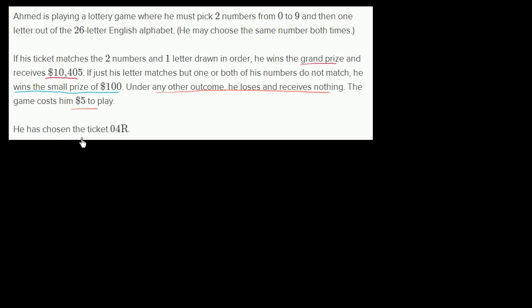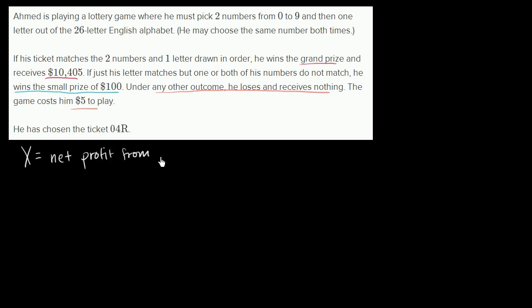He has chosen the ticket 0,4R. We're assuming he's paying the $5 to play and he picks the ticket 0,4R. Let's define a random variable X as the net profit from playing this lottery game.